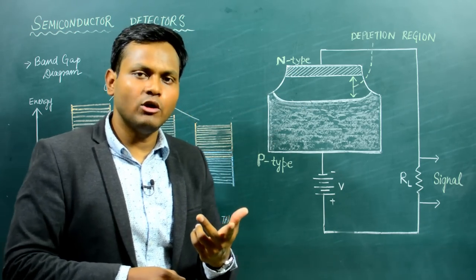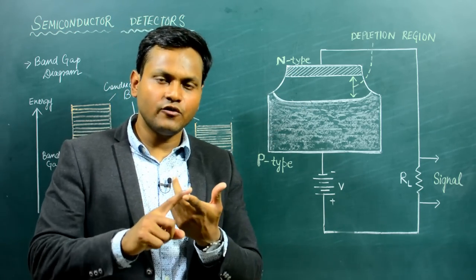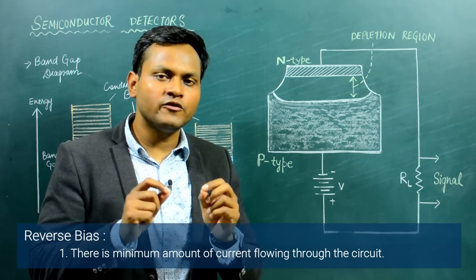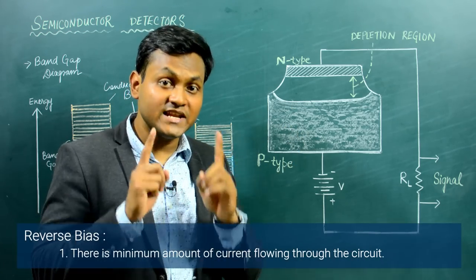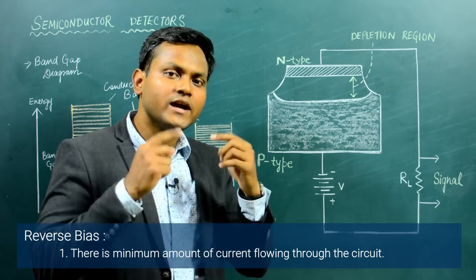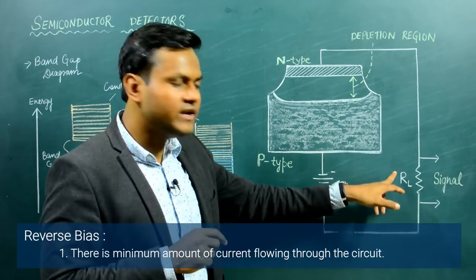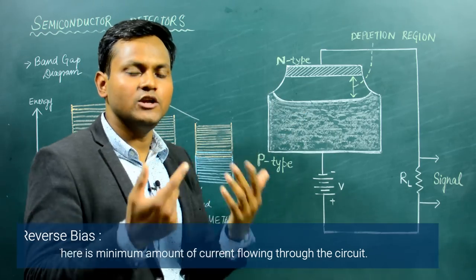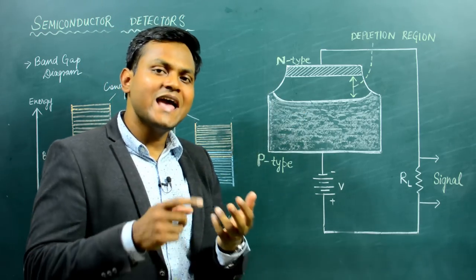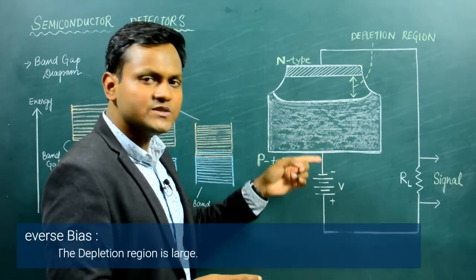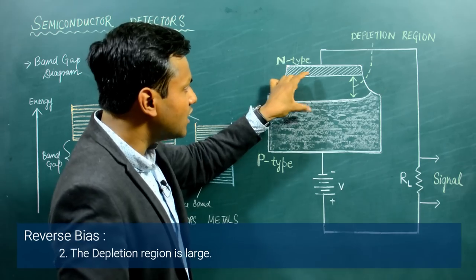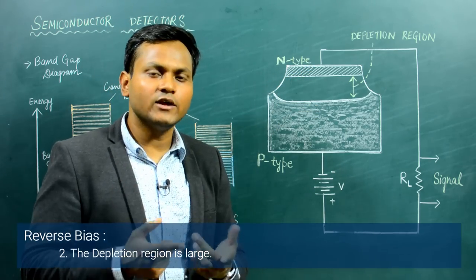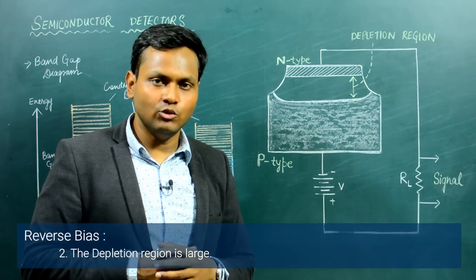Why is a reverse bias scenario important? In reverse bias, there is a minimum amount of current flowing through the circuit, which is necessary because the only current we want should be associated with the existence of some kind of external nuclear particle. The second reason is that in reverse bias we have a larger depletion region, which is important because it is the depletion layer which acts as a nuclear detector.